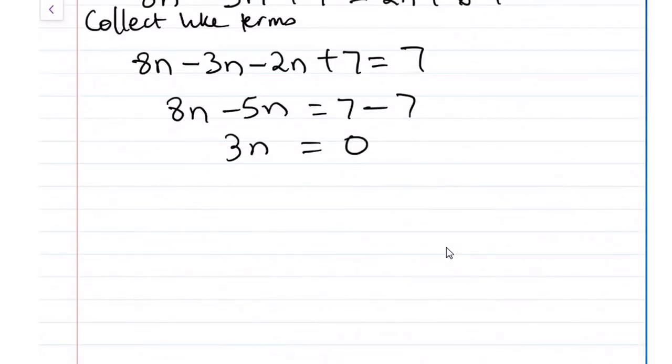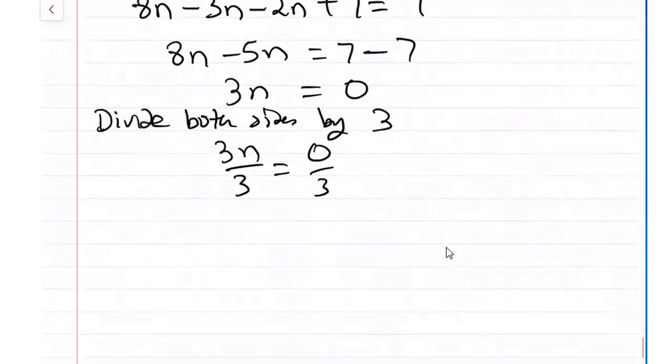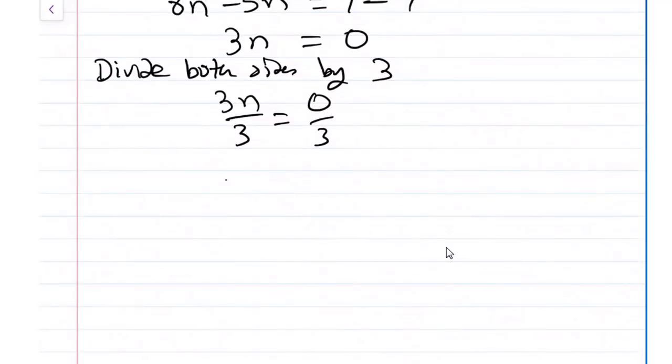Then if we divide 3n on both sides, divide both sides by 3. That will be 3n over 3 and 0 over 3. And our final answer will be n equals to 0.